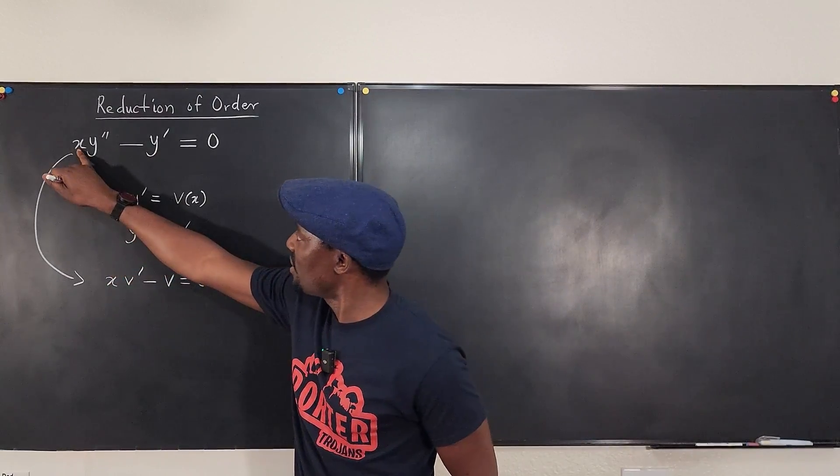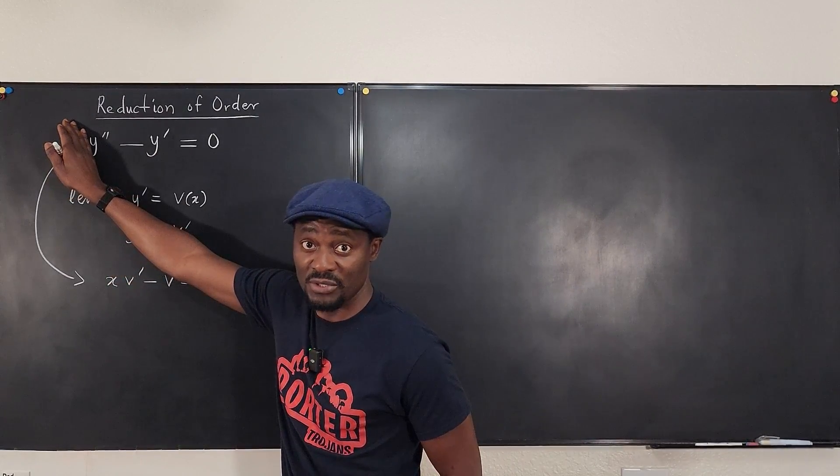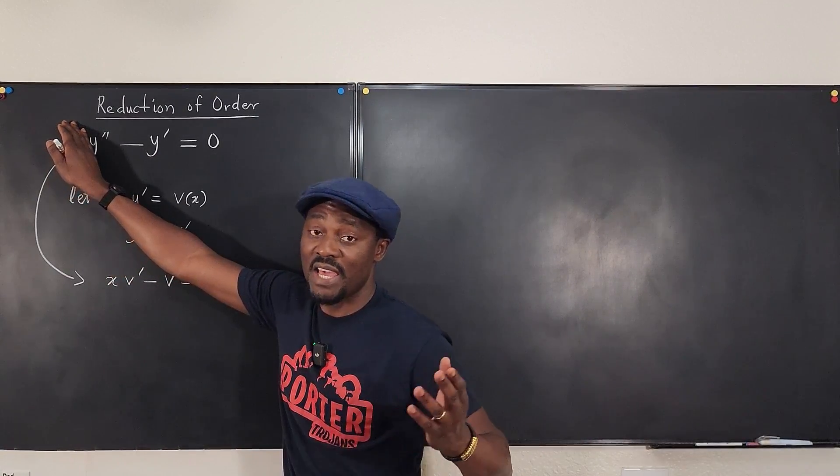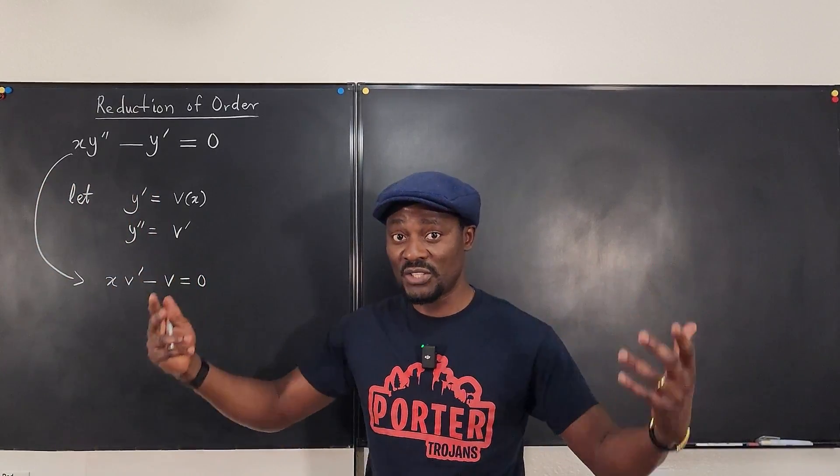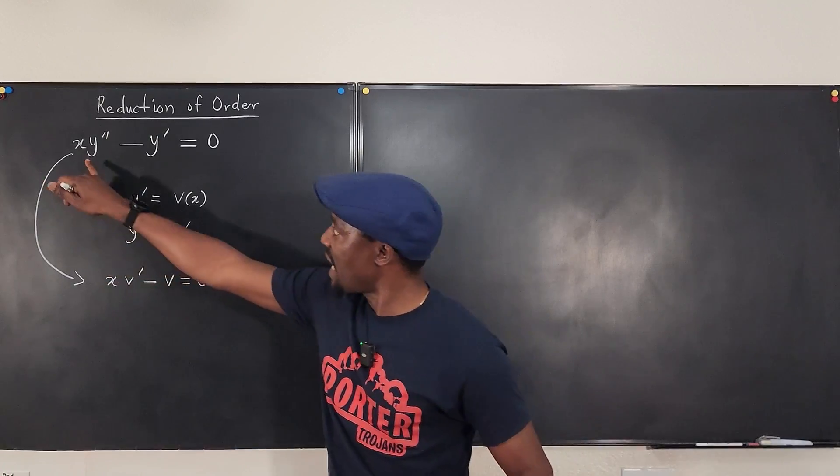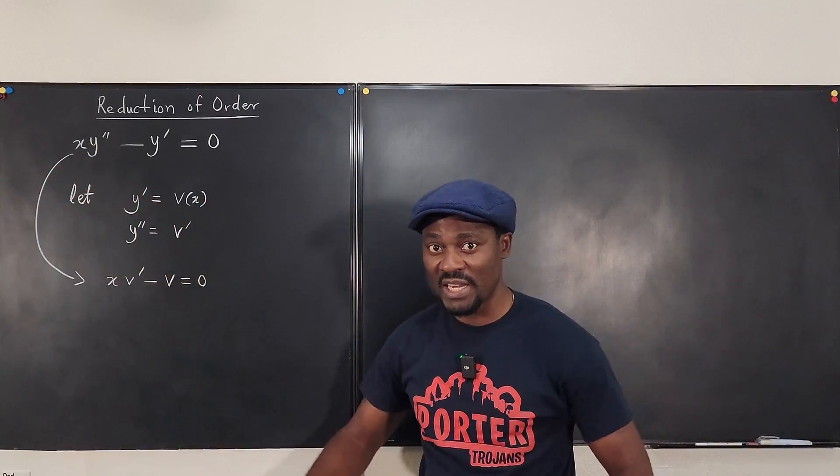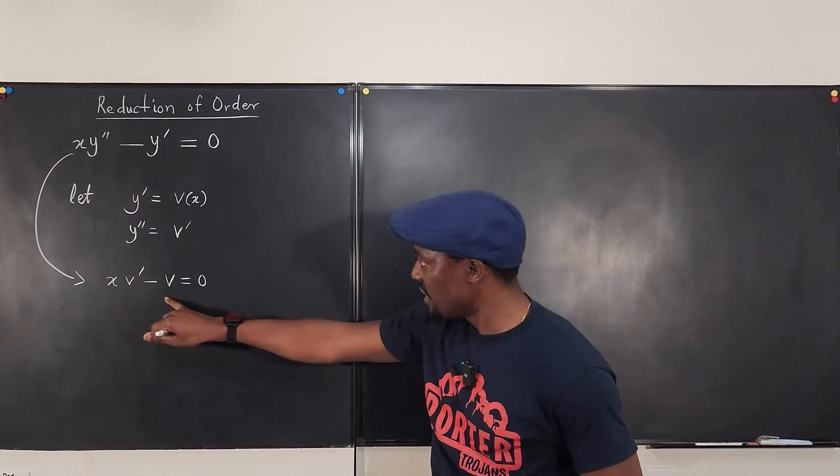See, if this x was not here, remember, we would have made our assumption that y is e to the rx and then we solve it and we get our answers which would be in terms of e to the x. But because there's an x here, it changes the whole dynamic and that's why this is what we have.